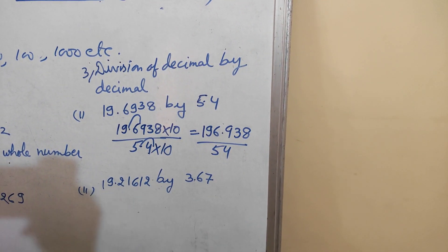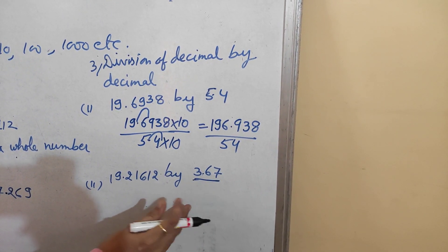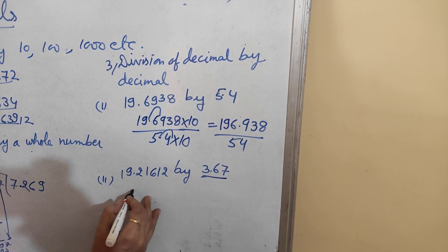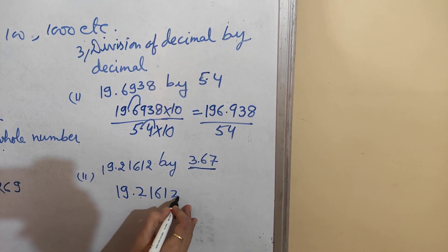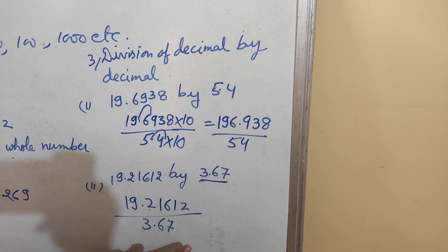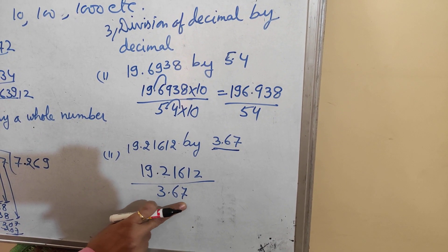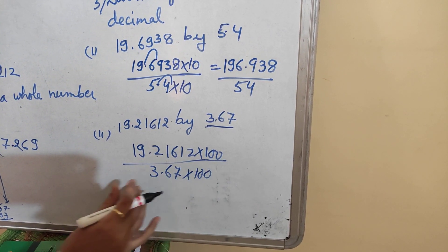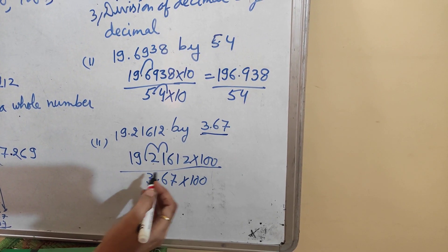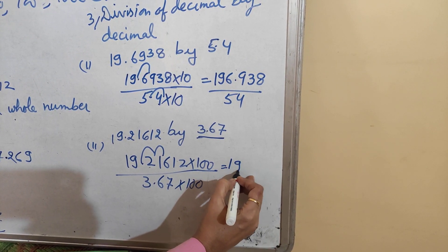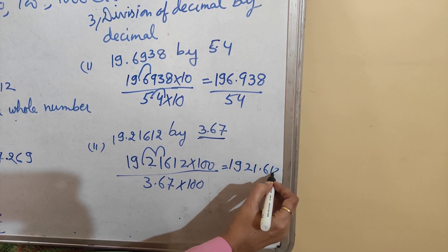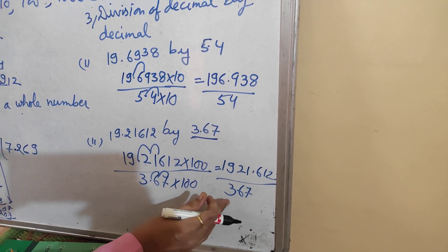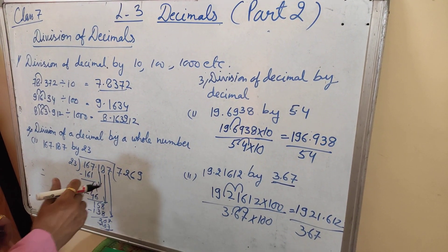One more example: here also the problem is the same — there is a decimal in the divisor. If there is a decimal in the divisor, we cannot do any division. So first we arrange them in a fractional form, then remove the decimal from the divisor. Here two digits are after the decimal, so the divisor should be multiplied by 100. We also multiply the dividend by 100, so the decimal moves two digits to the right for both, and the decimal is removed from the divisor. After that, we do the simple division as in the previous rule.